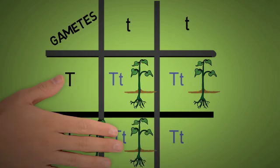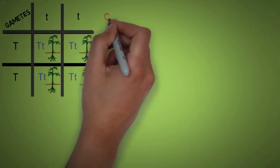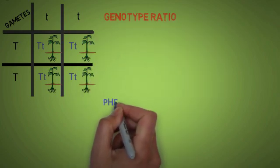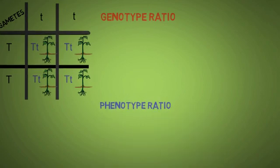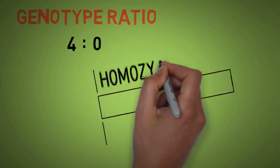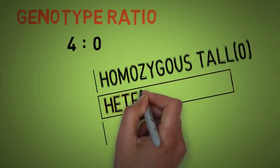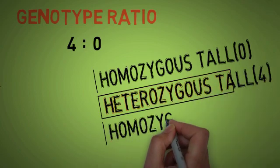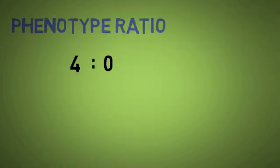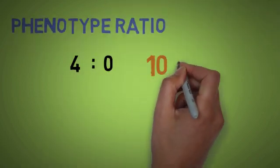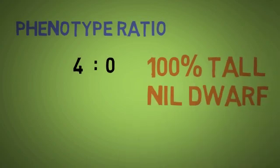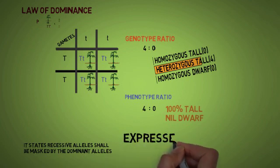On further studying the genotype and the phenotype patterns, we notice genotype ratio is 4 is to 0. The genotype makeup of F1 is nil homozygous and completely heterozygous. Phenotype ratio depicts the external expression of the trait of the plant. All F1 generation are only tall. Allele coding for tall masks the allele coding for dwarf.